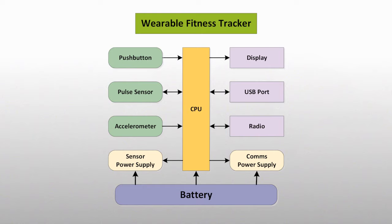push buttons, sensors, anything that you're measuring with your IoT device. The CPU in the middle controls the timing of these operations, and on the right we have the outputs — the display, maybe LED, LCD, a USB port, a radio — whatever the device uses to communicate with the world.